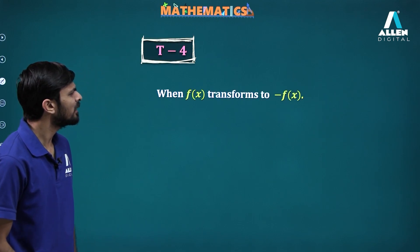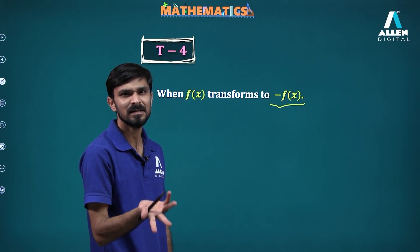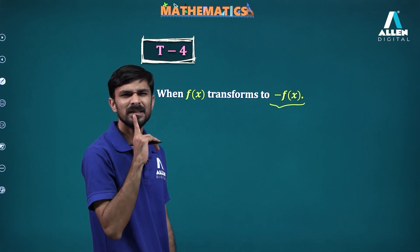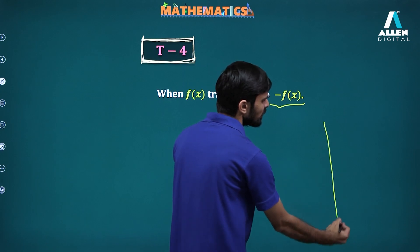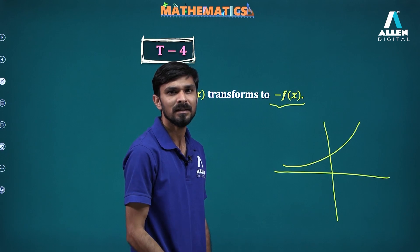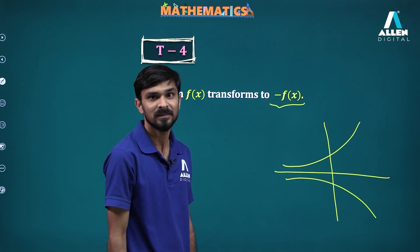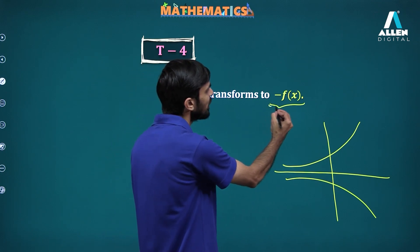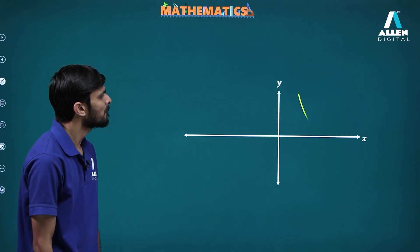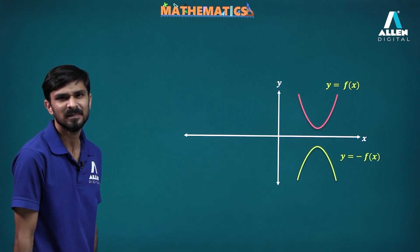Type 4: when f(x) transforms to minus f(x). This is just taking the negative of the graph of f(x). We are taking the reflection along the x-axis. So when you need to draw the graph of minus f(x), it is just the reflection along the x-axis — take the mirror image of f(x) along the x-axis, that's it.